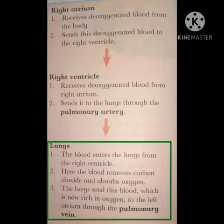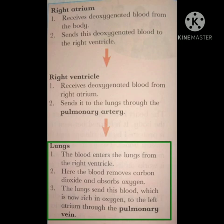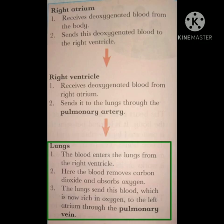Lungs: The blood enters the lungs from the right ventricle. Here the blood removes carbon dioxide and absorbs oxygen. The lungs send this blood, which is now rich in oxygen, to the left atrium through the pulmonary vein. Lungs جو blood left atrium میں send کرتے ہیں وہ oxygenated blood ہوتا ہے، means اس میں oxygen زیادہ ہوتی ہے.